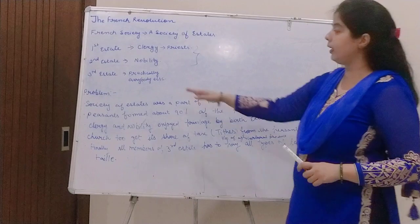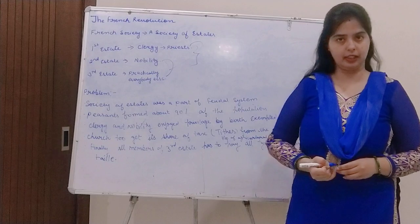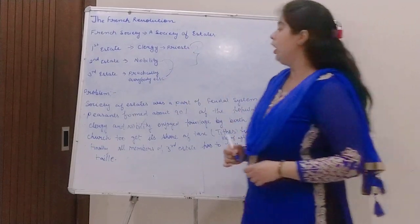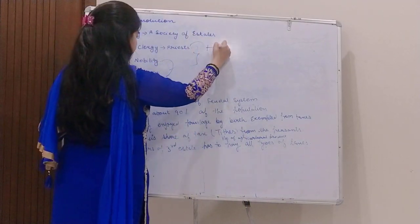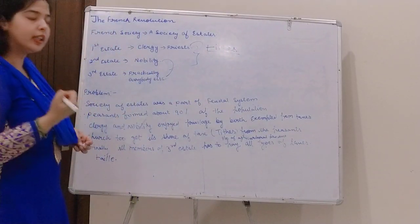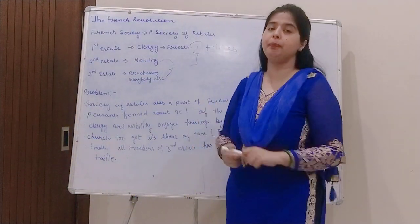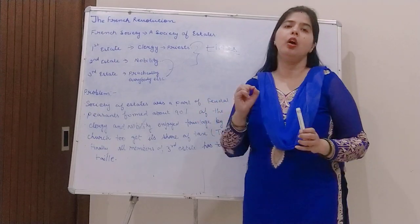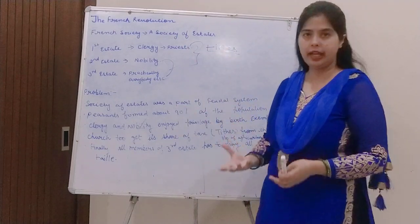The third estate also had to pay a tax called the tithe to the church. The tithe was one-tenth of the land's produced given to the church. So on top of other taxes, the third estate had to give one-tenth of all land produce to the church.